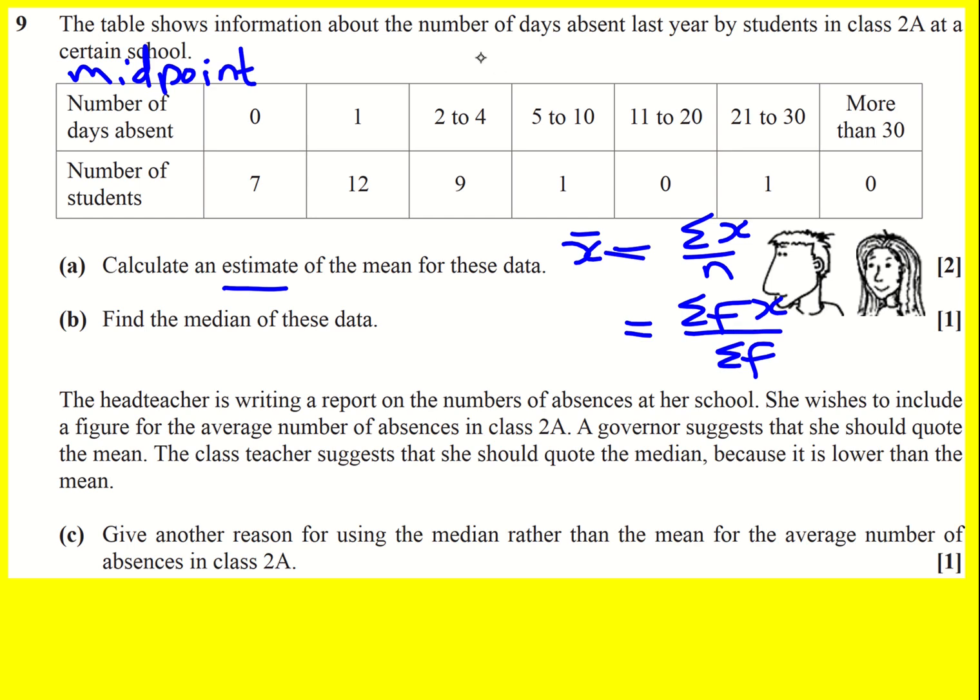So work out the midpoints. I don't really need to do the midpoints for these ones here. This is going to be three, this is going to be 7.5. To work out the midpoint, you can either find a number that's halfway in between or you can add them up and divide by two. In this case it's 15.5, and here we get 25.5. We don't have to worry about this one here, so I'm just going to cross that one off.